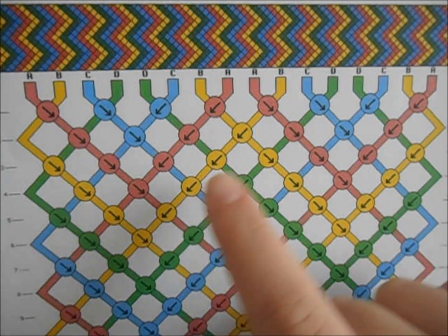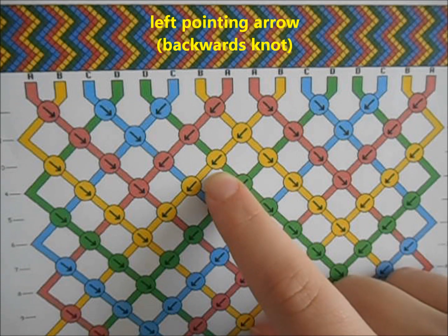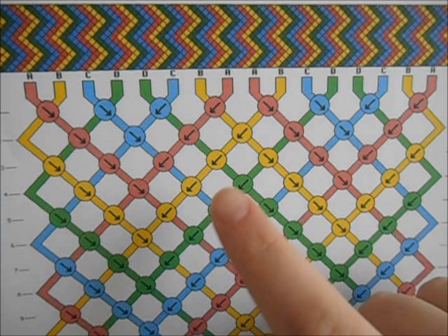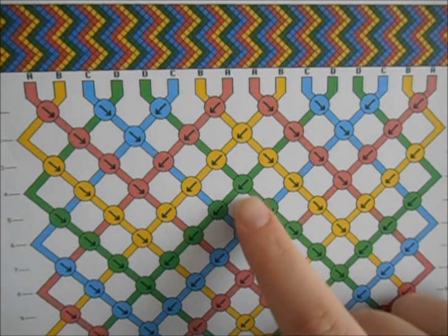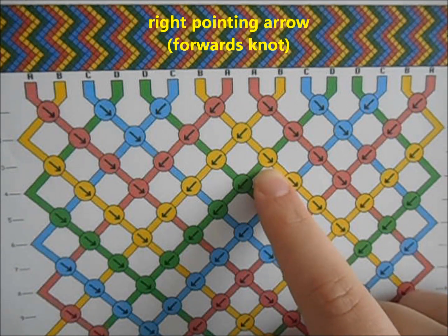The arrow that points to the left is a backwards knot. That is where you make the backwards knot in your pattern. When your bracelet pattern lists a right slanting arrow, that means it is a forward knot.